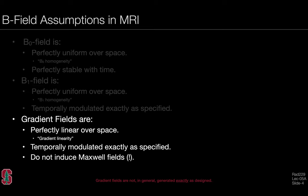I've used this slide in previous talks to discuss some of our B-field assumptions in MRI. Here we focus on those associated with gradient fields. Generally in MR, we assume that gradient fields are perfectly linear over space, that they're temporally modulated exactly as specified, and we don't typically include Maxwell terms. This lecture is focused on the assumption of perfect linearity over space.